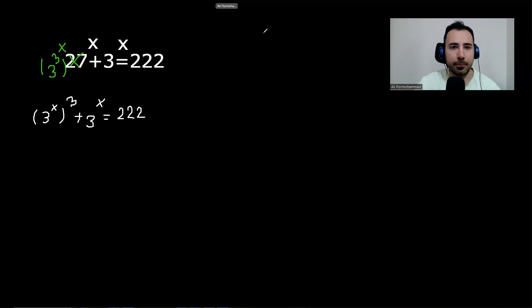Now that we have this and this one here, because they are the same thing, we could call them anything else. We could call them x again, we could call them y, whatever. I'm going to call them y. So this would be y to the power of 3 plus y equals 222.